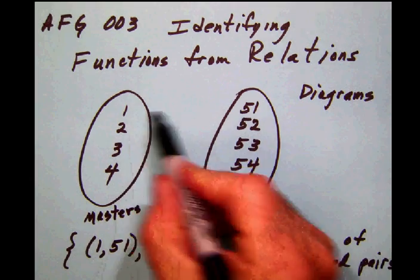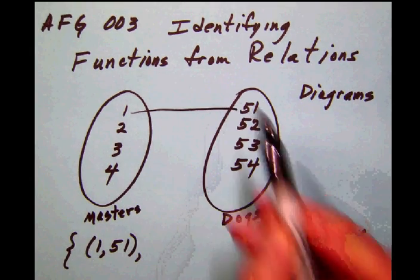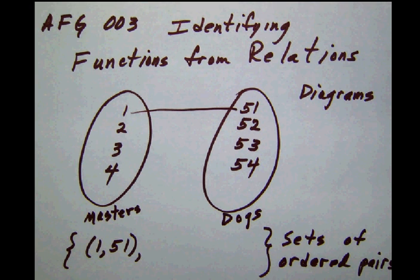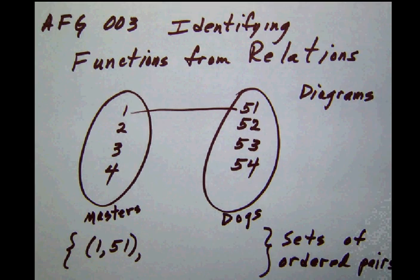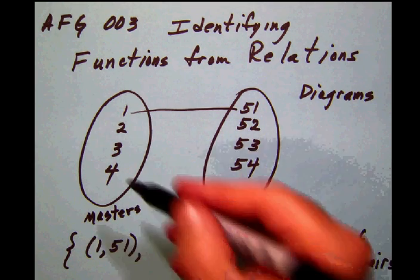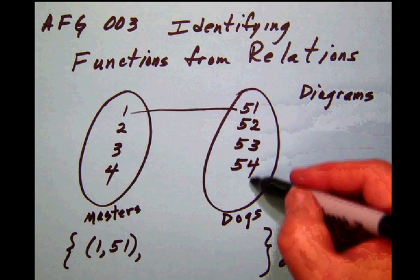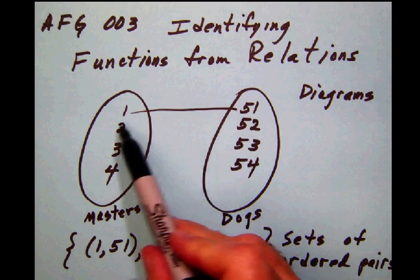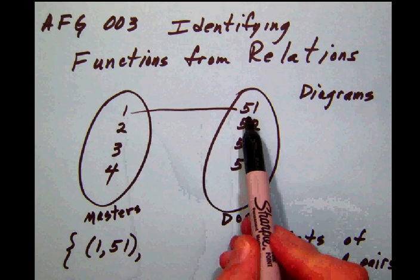So what we could do is we could illustrate this by simply drawing a line across here, and so what we're saying is that master number one, you can imagine all the masters are wearing their jerseys here kind of like a basketball team. They have the numbers one, two, three, four, and over here the dogs are wearing little sandwich style numbers that show little boards that have their numbers on their tags so that we can identify them. So we have this relationship between the master and its dog.